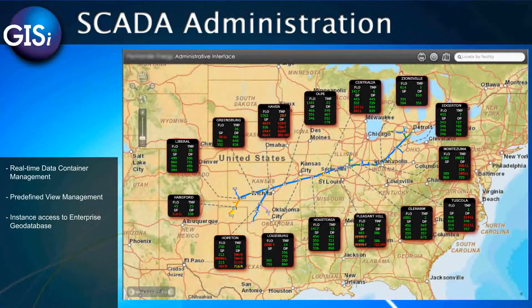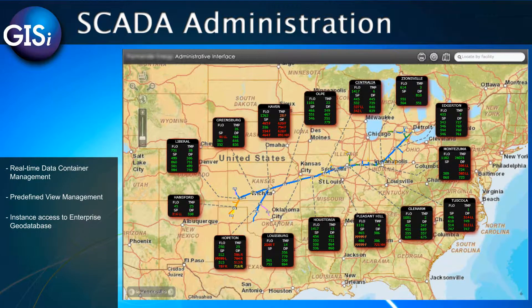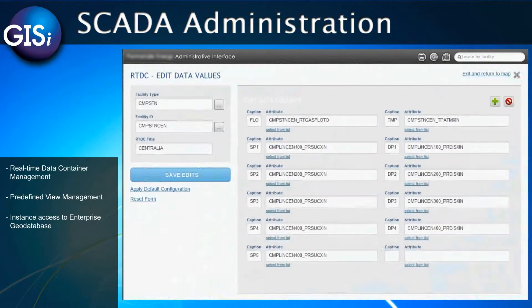The Enterprise Pipeline Operations System utilizes an administration interface. This application takes advantage of the existing Silverlight Mapping Container used in the Operations System, but accessed in this form gives us different actions.